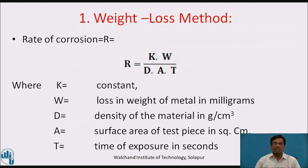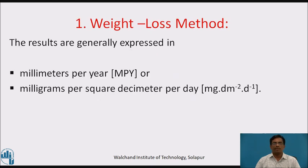The calculation is done with the formula: rate of corrosion R = KW / DAT, where K is a constant, W is loss in weight of metal in milligrams, D is the density of the material in grams per centimeter cube, A is surface area of test piece in square centimeter, and T is time of exposure in seconds. The results are generally expressed in millimeters per year or milligrams per square decimeter per day.